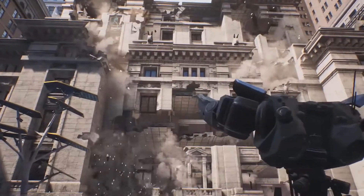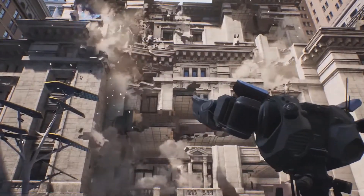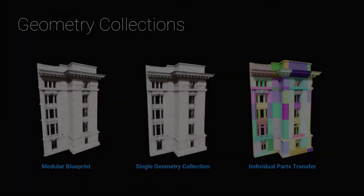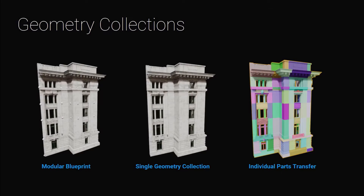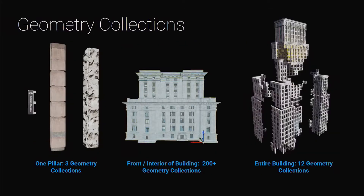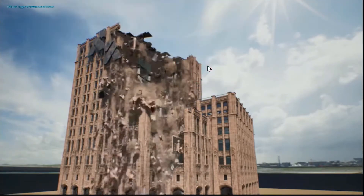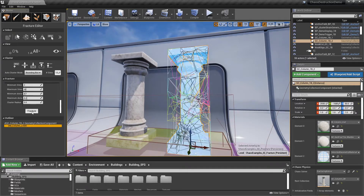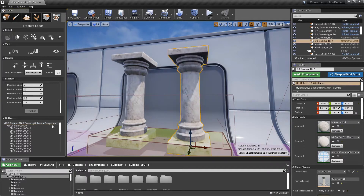Chaos Destruction is the first feature of Unreal Engine's next-generation high-performance physics system. With Chaos, VFX artists can fracture, shatter, and demolish massive-scale scenes at cinematic quality with unprecedented levels of artistic control. Unreal Engine with Chaos allows for the creation of simulations in real-time.